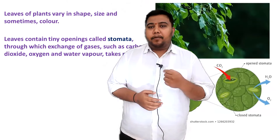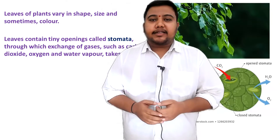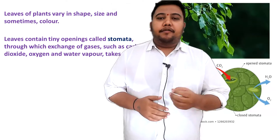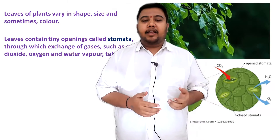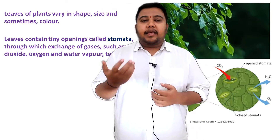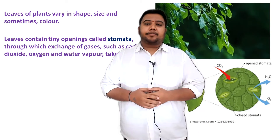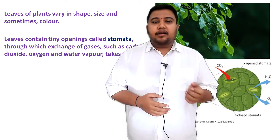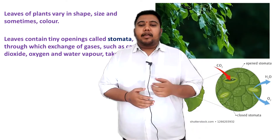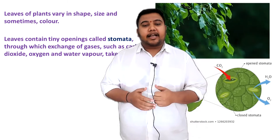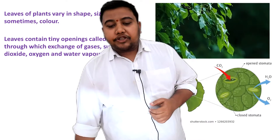Leaves contain tiny openings called stomata. Through the stomata, exchange of gases takes place — the plant takes in carbon dioxide and releases oxygen as a side product of the photosynthesis process. Not only gases, but water vapour can also be exchanged through the stomata during the transpiration process.